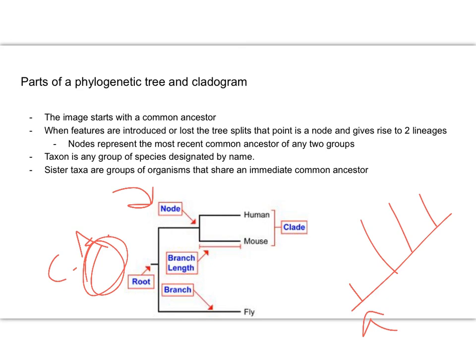For instance, this node that we pointed out right here represents the most recent common ancestor of a human and a mouse. The taxon is any group of species that's designated by name. Our sister taxa are groups of organisms that share an immediate common ancestor. There is no other branching in between them—they are the last branch off.